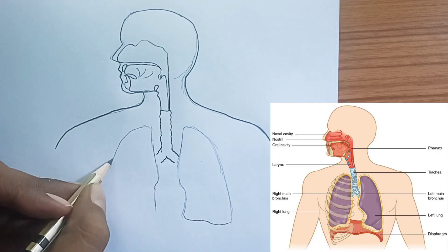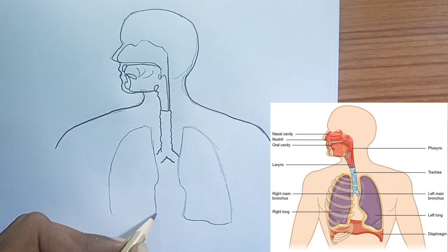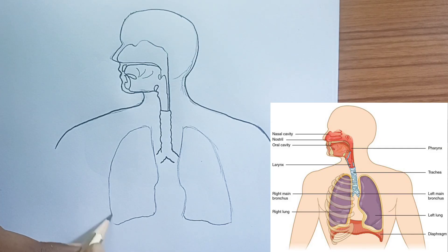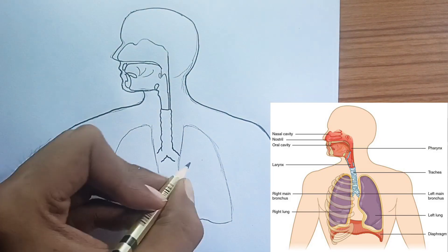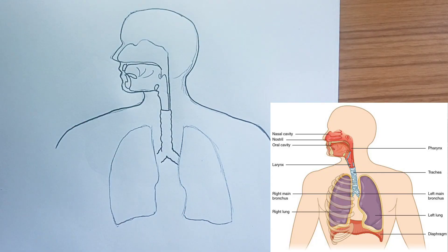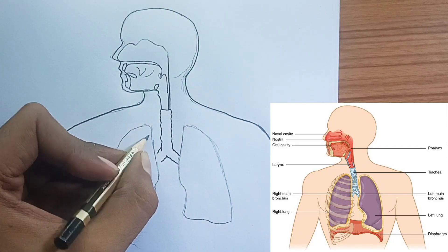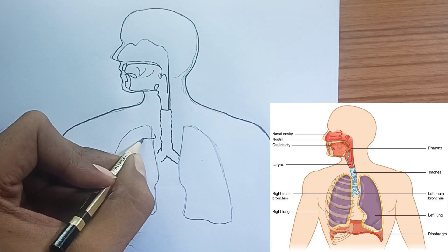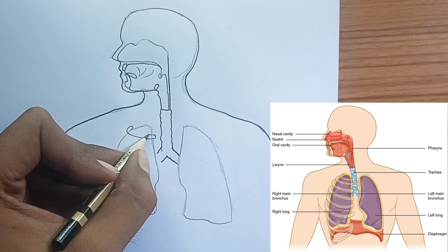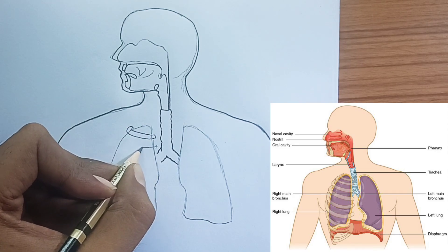In summary, the respiratory system is an intricate and vital system responsible for bringing oxygen into our bodies and removing carbon dioxide. It involves a pathway of tubes that conduct air to the alveoli in the lungs, where gas exchange occurs, all powered by the coordinated action of muscles like the diaphragm and rib muscles.